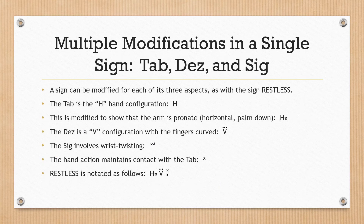Multiple modifications in a single sign — TAB, DES and SIG. A sign can be modified for each of its three aspects, as with the sign RESTLESS. The TAB is the H hand configuration, capital letter H, modified to show that the arm is pronate — horizontal palm down. The DES is a V configuration with the fingers curved. The SIG involves wrist twisting, and the hand action maintains contact with the TAB. RESTLESS is notated as shown.